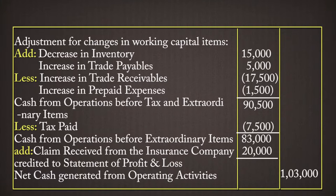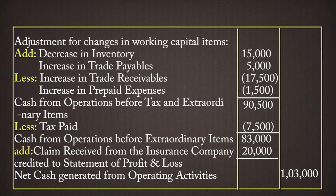For trade receivables: they are assets. In 2017 Rs. 37,500 and in 2018 Rs. 55,000 — an increase of Rs. 17,500. Since current assets increased, we minus Rs. 17,500. For prepaid expenses: in 2017 Rs. 1,000 and 2018 Rs. 2,500 — an increase of Rs. 1,500. Since assets increased, we minus Rs. 1,500.